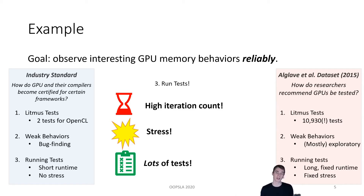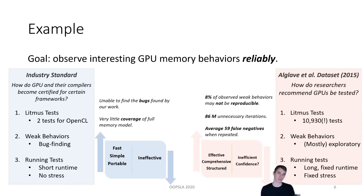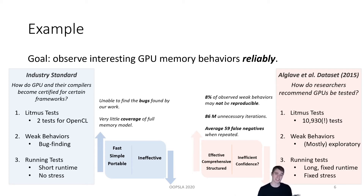We can see some direct tradeoffs here. While a researcher may be happy to test the GPU for a week of runtime, production testing environments need fast, efficient runtimes. Currently, this leads to a big gap between approaches. Industry standards have a few tests, short runtimes, and no stress — this is fast, but it's not really effective. On the other hand, researchers often employ inefficient, sometimes unwieldy approaches. Furthermore, we conducted a preliminary meta-study of the Alglave dataset and identified a number of concerns that hurt statistical confidence in the results. We found non-reproducible weak behaviors when repeated, hours of unnecessary iterations, and a significant portion of expected false negatives — that is, weak behaviors that are possible but not observed if the experiment was repeated — all creating industry skepticism towards academic empirical testing methods.